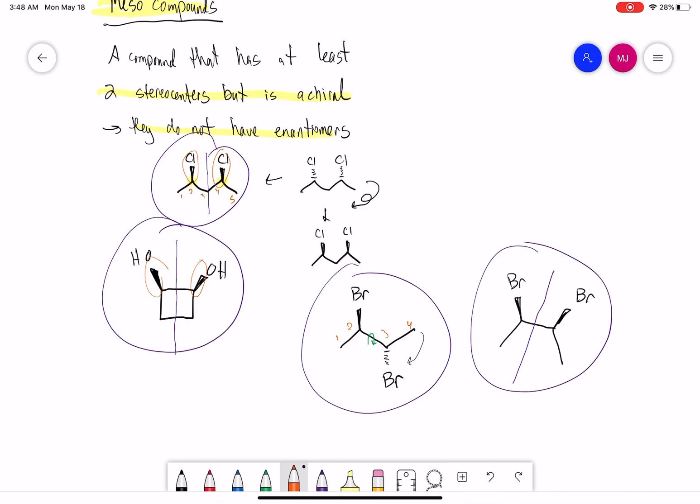But if you have an even number of carbons, then if you rotate the bond, that's a little harder to see that the compound is meso.